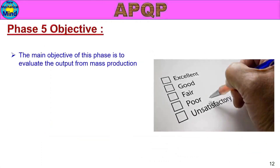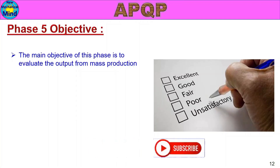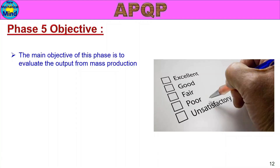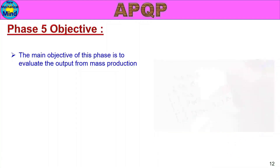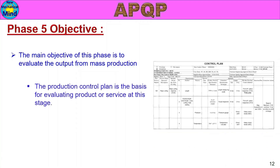The main objective of this phase is to evaluate the output from mass production. APQP Phase 5 is the basis for evaluating product or service at this stage.